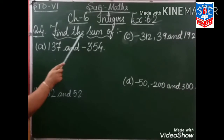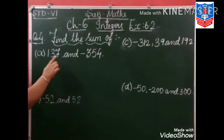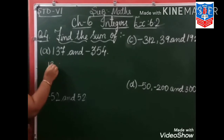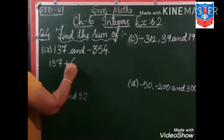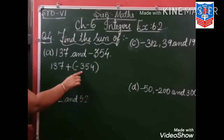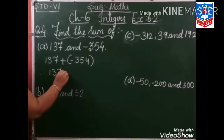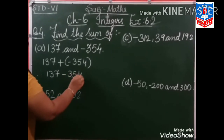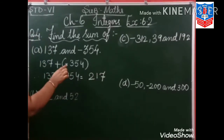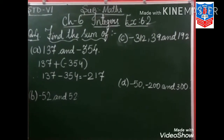Question number 4: find the sum. Sum of means you have to add. So you have to add 137 with minus 354: 137 plus minus 354. Now plus minus is minus. Therefore, 137 minus 354 is equal to 217, and the greater sign is minus. So our answer is minus 217.